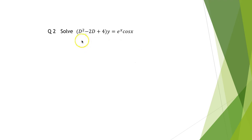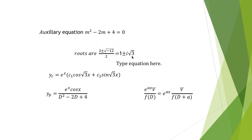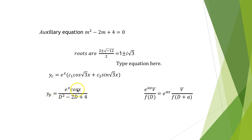Coming to the next question: solve (D² − 2D + 4)y = e^x·cos(x). The auxiliary equation is m² − 2m + 4 = 0. Using the quadratic formula, the roots are 1 ± i√3. So the complementary function is e^x(c₁cos(√3·x) + c₂sin(√3·x)). The particular integral is e^x·cos(x) / (D²−2D+4), which is of the form e^(ax)·V/f(D) = e^(ax)·V/f(D+a).